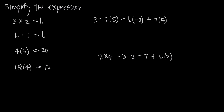So here we have 3, then a subtraction sign, and then 2 times 5 — we know this is multiplication. Then we have a subtraction sign, and then 6 times a negative 2 — that's multiplication. Then we have plus 2 times 5; the 2 times 5 is just like this 4 times 5 here — that's multiplication.